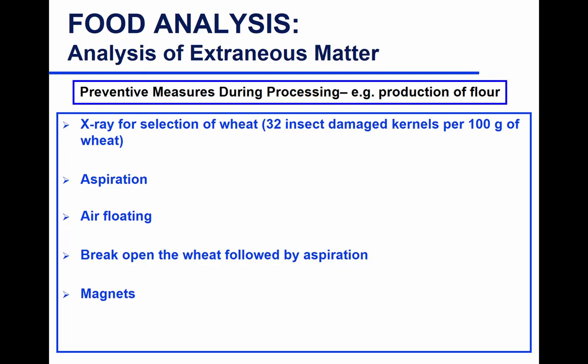Preventative measures include screening grain before milling, with a limit of 32 insect-damaged kernels per 100 grams of wheat as acceptable. You can reduce insects and filth by aspiration — running the grains on belts and aspirating so that light filth flies off. For heavy filth such as stones and mud, you use air flotation: grains on a belt with holes and air underneath cause small grains to float while rocks and pebbles remain on the belt and are separated. You can also crack open the wheat and aspirate what's inside, and use magnets to remove any metal contamination.